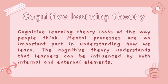The first learning theory is the cognitive learning theory. Cognitive learning theory looks at the way people think. Mental processes are an important part in understanding how we learn. The cognitive theory understands that learners can be influenced by both internal and external elements. Plato and Descartes are two of the first philosophers that focused on cognition and how we as human beings think, with many other researchers looking deeper into the idea of how we think, spurring more research.